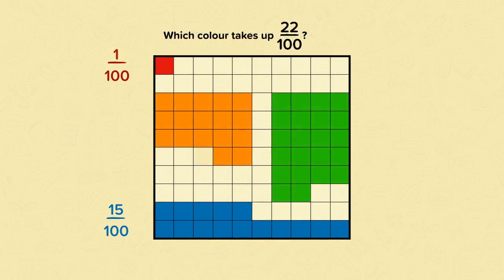Now let's add some more colors. Which color takes up twenty-two hundredths of this square — is it the orange or the green? Pause the video and have a go. Well done if you knew that it was green, because there are 22 green squares out of the total of a hundred squares. Now see if you can work out what fraction is orange. Well done if you got seventeen hundredths.